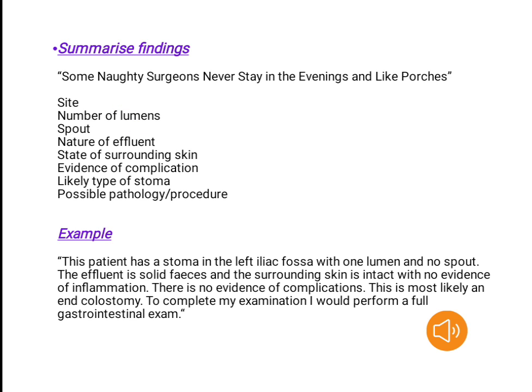Example: this patient has a stoma in the left iliac fossa with one lumen and no spout. The effluent is solid feces and the surrounding skin is intact with no evidence of inflammation. There is no evidence of complications. This is most likely an end colostomy. To complete my examination I would perform a full gastrointestinal exam.